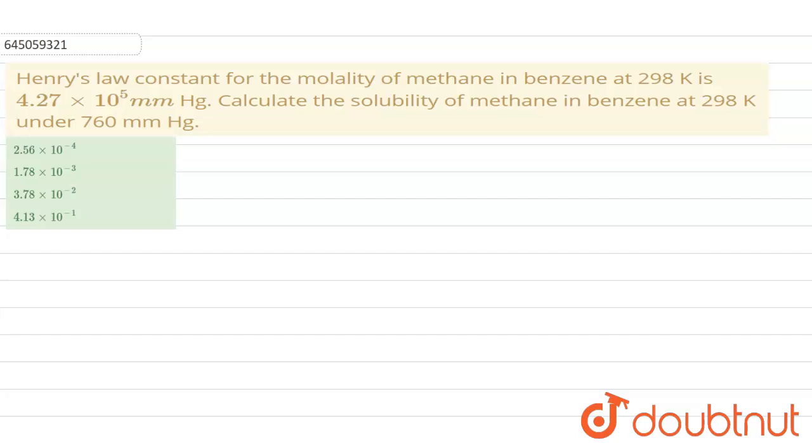Hello everyone, in this question we have to find out the solubility of methane in benzene. What is given: Henry's law constant is given as 4.27 times 10 to power 5 mm of Hg, and pressure is given 760 mm of Hg.